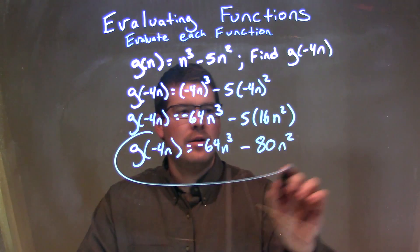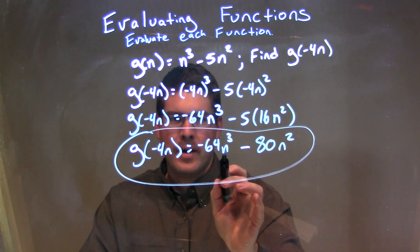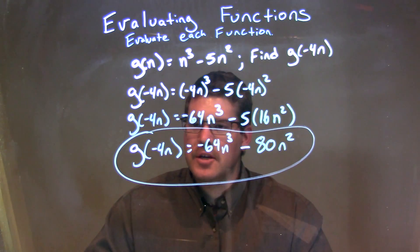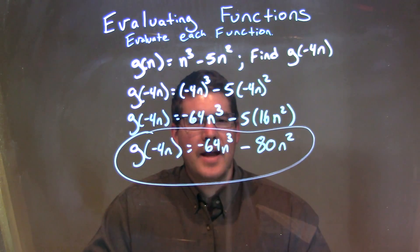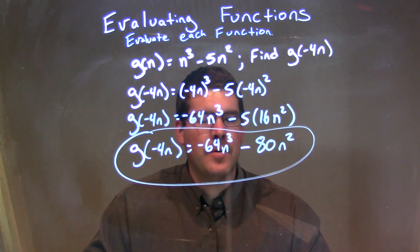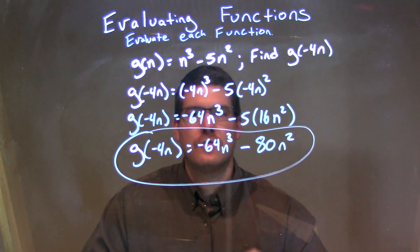Our final answer — there's nothing more we can combine, there are no like terms — is g of negative 4n is equal to negative 64n to the third minus 80n squared.